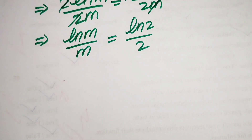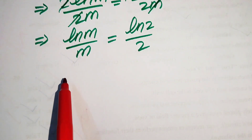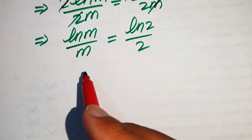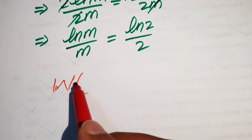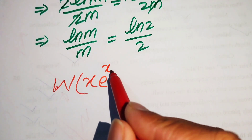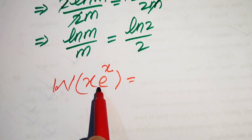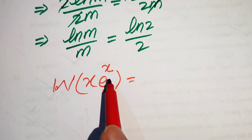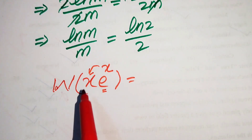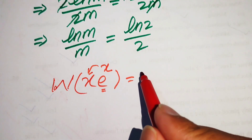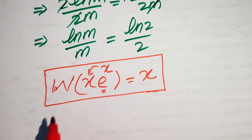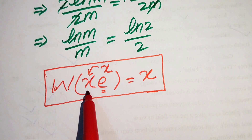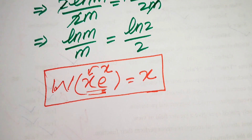Now we introduce the Lambert W function. The Lambert W function is denoted by W, and its definition is: if you have W of x times e to the power of x, the output of this function is the exponent x of the exponential. So the output is the exponent of e, which is x.